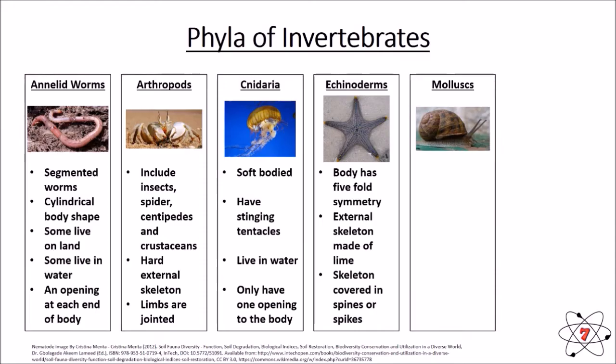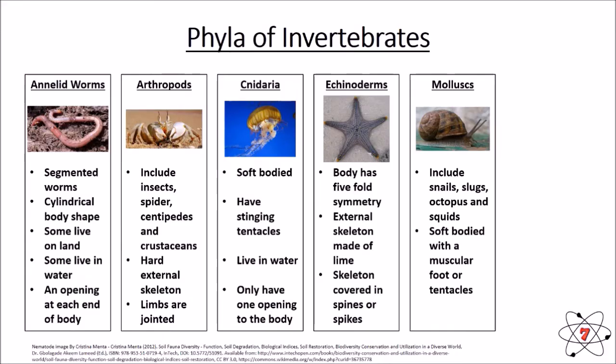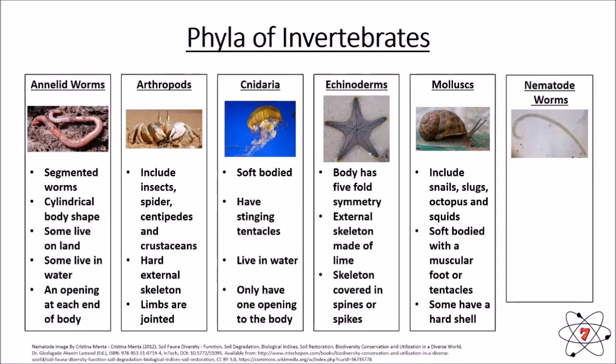Molluscs are another phyla of invertebrates. They include snails, slugs, octopus, and squids. They are soft-bodied and have a muscular foot or tentacles. Some of them, such as a snail, have a hard shell, but they don't need to.